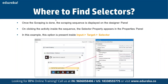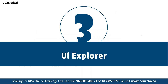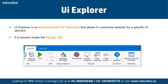Now let's discuss selectors and then we'll do a hands-on demo. First we need to understand scraping — for example, suppose we have a website from which we want to scrape content. We need to use the UI elements available under UiPath to get started. To work with those, we make use of UI Explorer, which is essentially an advanced tool for selectors that allows us to customize the selector for a specific UI element.